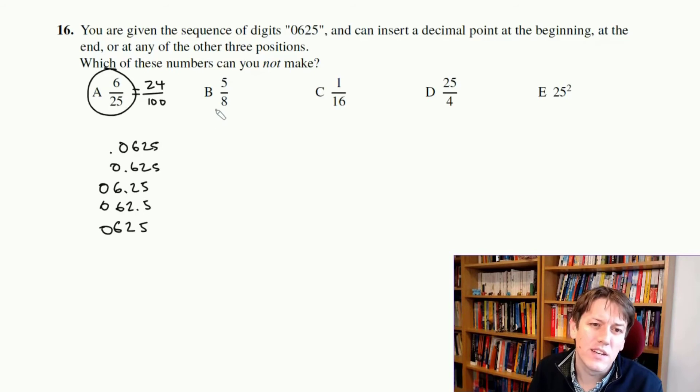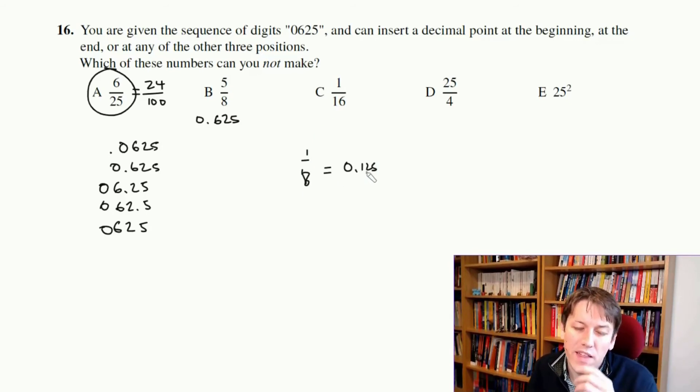We might want to check all of the others. 5/8ths is 0.625, 1/16th, you might know that 1/8th is 0.125, and if you do half of that, half of 125 is 62 and a half, so you would get 0.0625. 25 over 4, that's 6 and a quarter, so that's 6.25, and 25 squared is 625, so we can make all the others, and the answer is A.